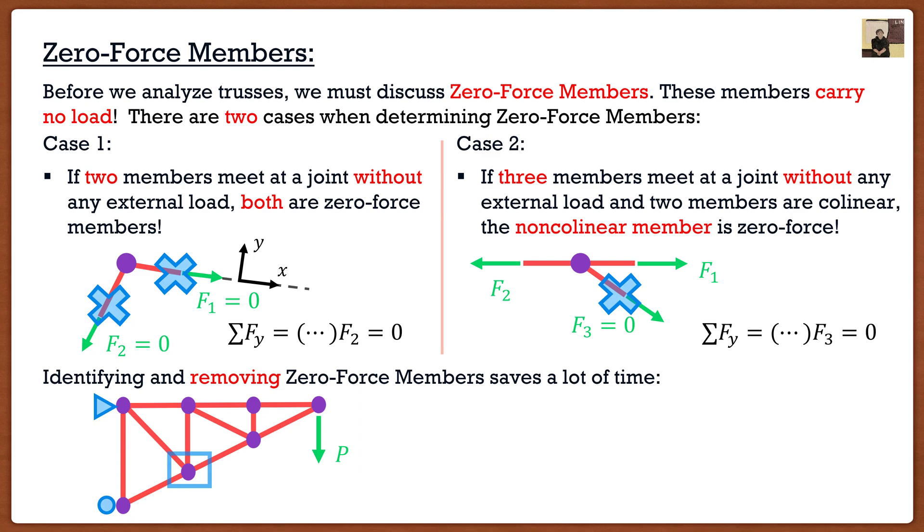Now if I were to go to the other joints and work my way through, not a lot actually happens. If I look at this joint, we have four members, so it doesn't fall into any case. This joint has four members, again doesn't fall into any case. This joint, four members, no case. But when we look at this joint, we have three members. If we look at case two, it talks about three members, and the only qualification that we need is that two of the members are collinear. If we look here, those top two members are collinear. Therefore that third member must be zero force. I can say that that member in there is going to be zero force.